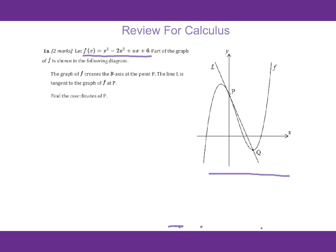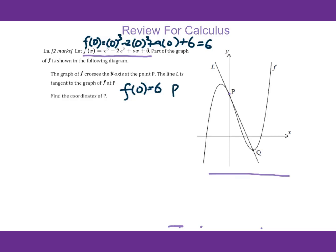For the y-intercept, we know that it's f of 0, so we plug in f of 0. You will get 0 to the third power minus 2 times 0 squared plus 8 times 0 plus 6. You will get 6. Therefore, the coordinate for P will be (0, 6).